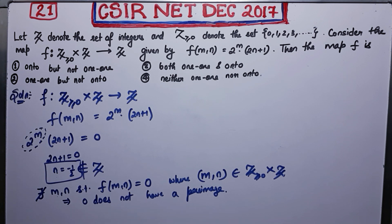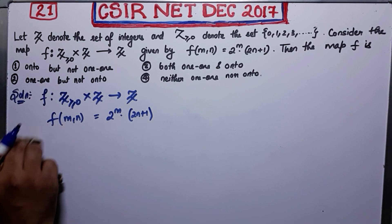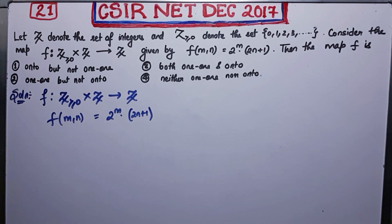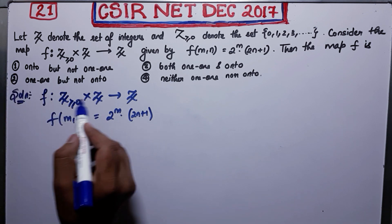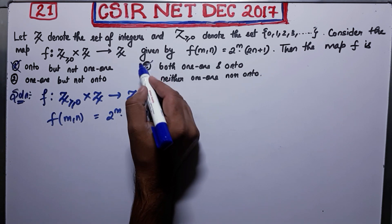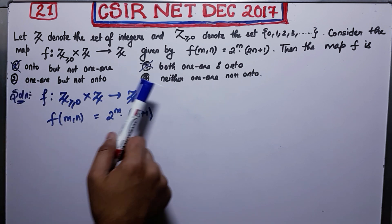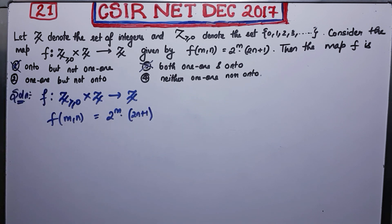Now let us check injectivity. Since the map is not onto, your first option which says it is onto is wrong, and the third option which says it is both one-one and onto is also wrong. So you have to choose between the second and fourth options, and for that we need to check whether the map is one-one.